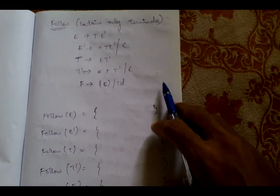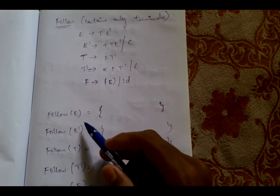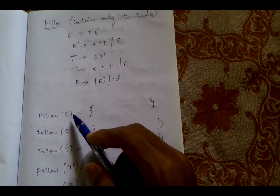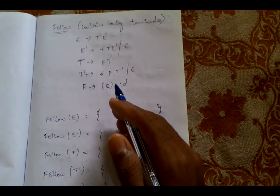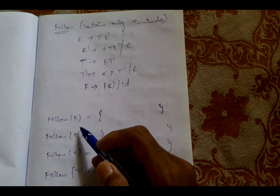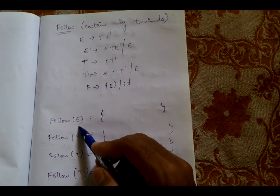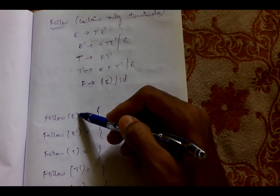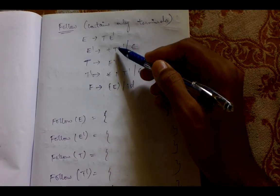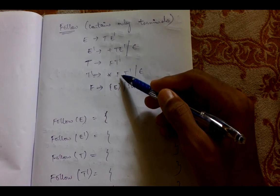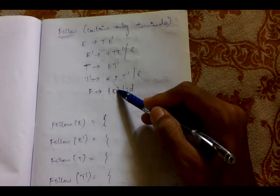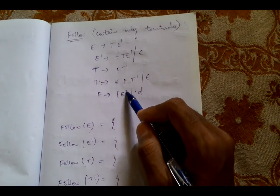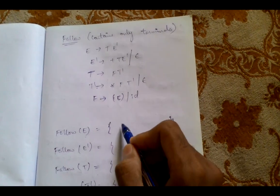The first non-terminal is E. For this non-terminal we need to calculate the follow set. Basically, the follow set means the terminals which are immediately coming after this non-terminal. Whenever you are finding the follow for any non-terminal, first look for that non-terminal in the right hand side of the grammar. Here we have follow of E, so we look for E in the right hand side. We find E here, and after E we have a closing bracket, so that closing bracket will come in the follow set of E.